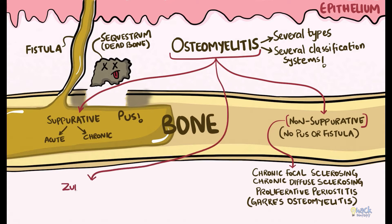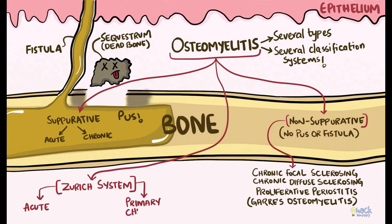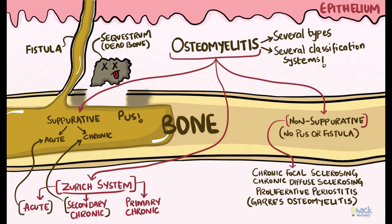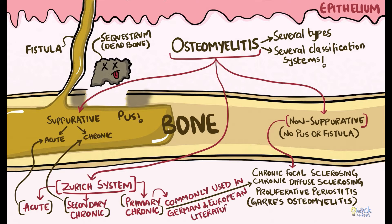There is another classification called the Zurich system, which employs a simple classification categorizing osteomyelitis as acute osteomyelitis, primary chronic osteomyelitis, and secondary chronic osteomyelitis. The acute and secondary chronic osteomyelitis refer to the acute and chronic suppurative forms respectively. The primary chronic osteomyelitis is used synonymously with chronic diffuse sclerosing osteomyelitis. This synonymous usage of these terms is common in German and continental European medical and dental literature.